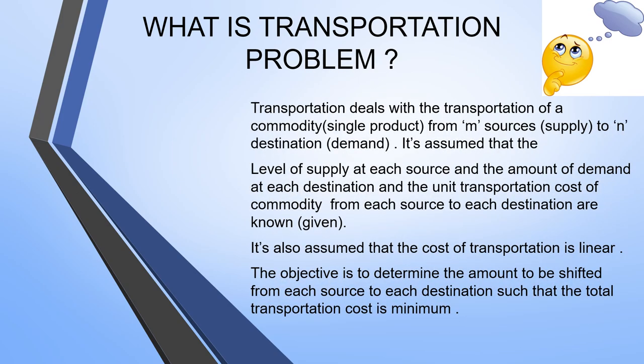A transportation problem deals with the transportation of a commodity from M sources to N destinations. It is assumed that the level of supply at each source, the amount of demand at each destination, and the unit transportation cost of the commodity from each source to each destination are known. It is also assumed that the cost of transportation is linear.